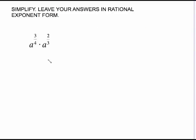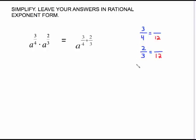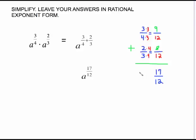A lot of times you won't have a common denominator. For a to the 3/4 times a to the 2/3, it's the same rule — keep the base and add the exponents. If your calculator does fractions, just type 3 divided by 4 plus 2 divided by 3 and hit equals. If not, you'll need to find a common denominator of 12. Multiply 3/4 by 3/3 to get 9/12, and multiply 2/3 by 4/4 to get 8/12. That gives us 17/12, so the answer is a to the 17/12.